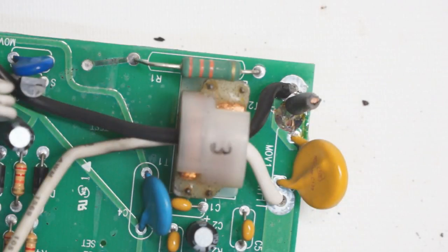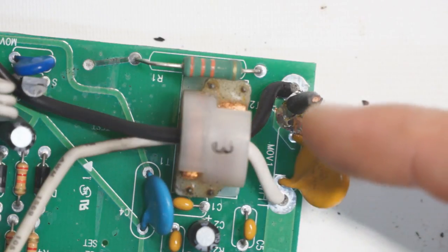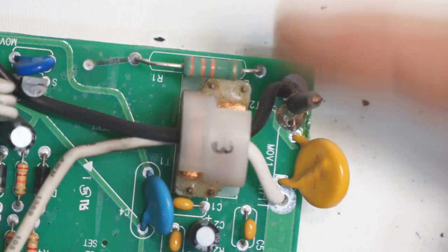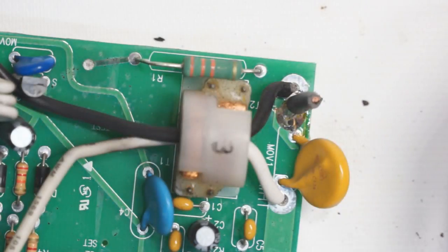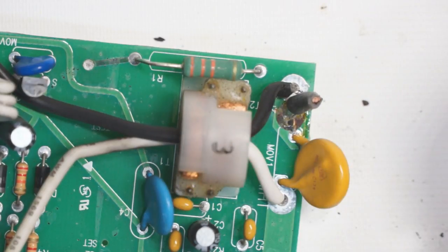back through the current transformer and back out to the mains. If everything is happening properly those currents cancel out. So you have one amp leaving, you have one amp returning. The little current transformer here measures nothing.